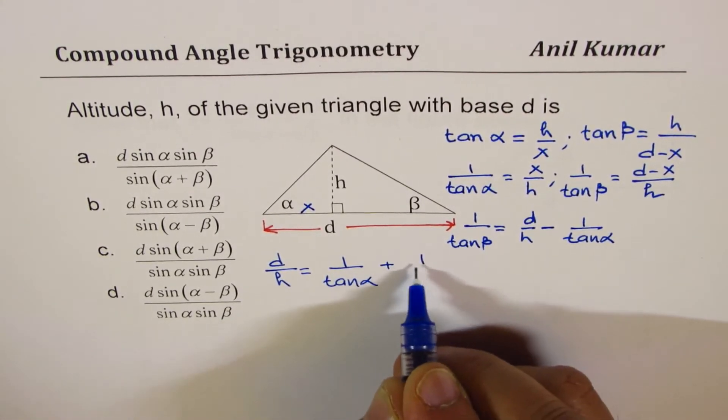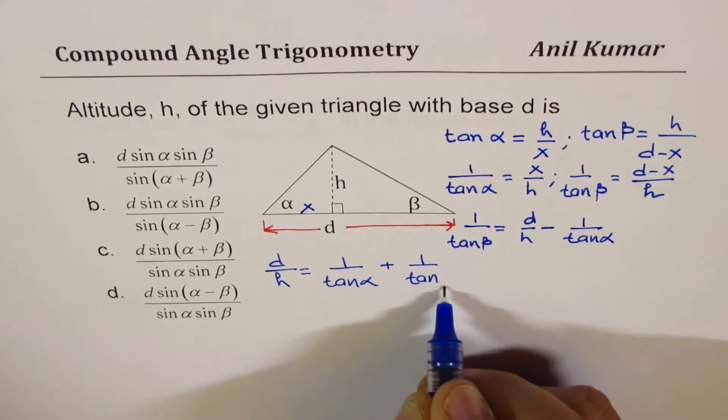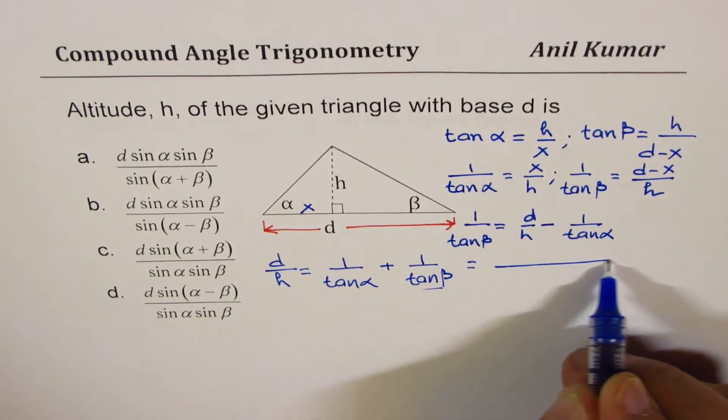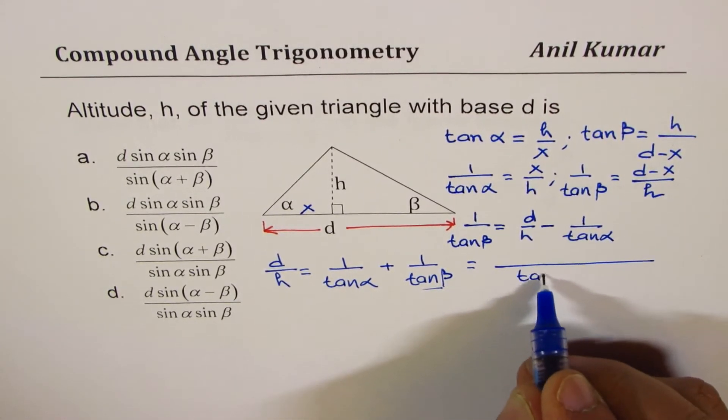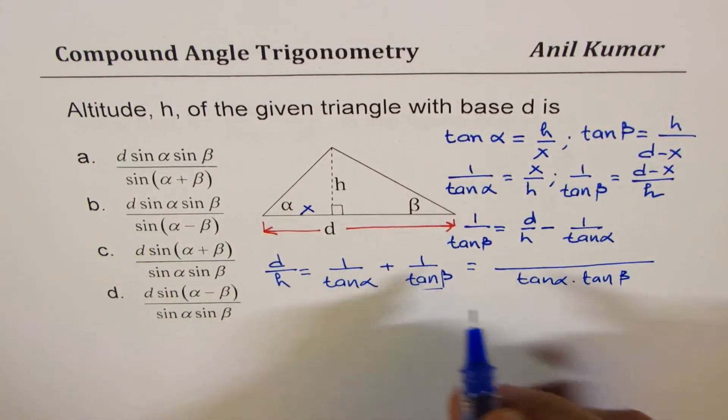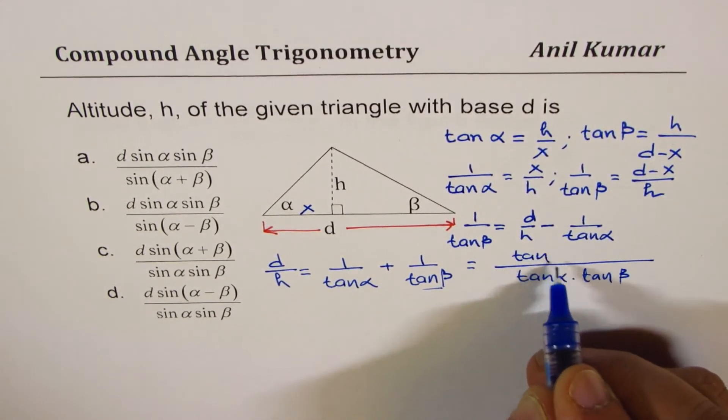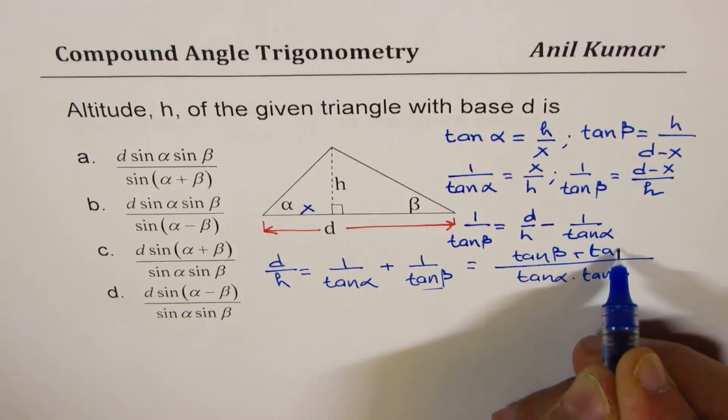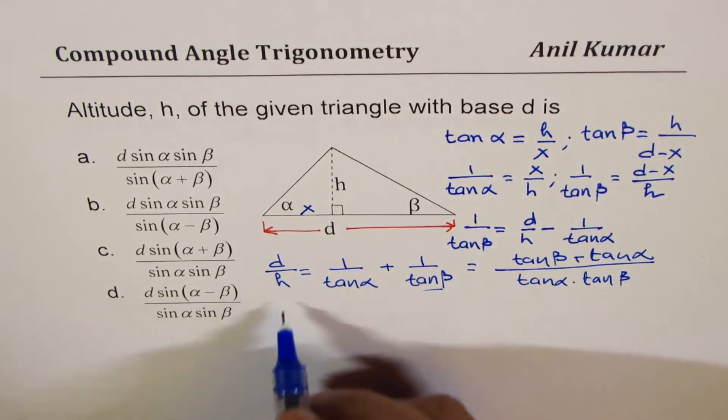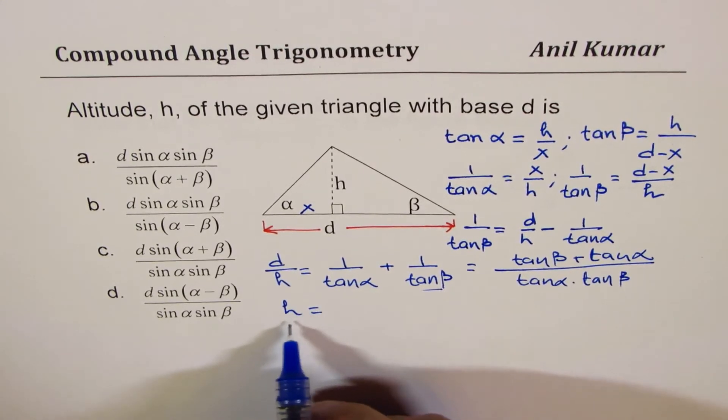We can take the common denominator and then write tan α tan β over tan β plus tan α. And now if I flip it I know what h is, so h equals - now here we have d - we can take d in the denominator and we will just flip it.